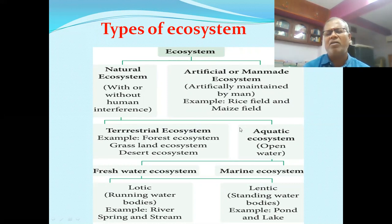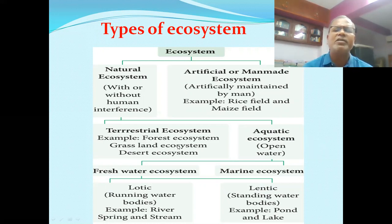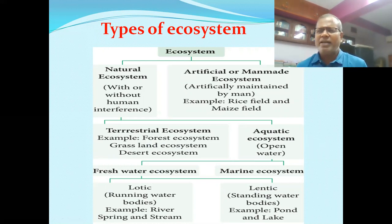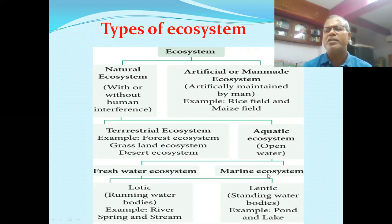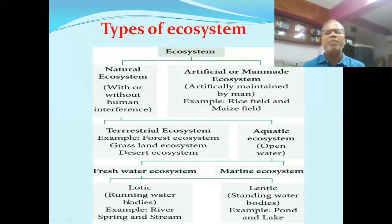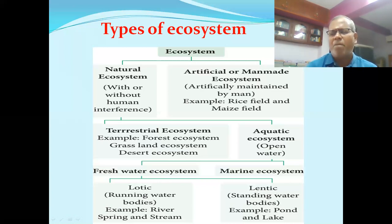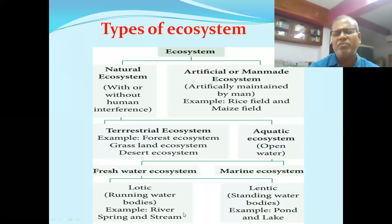Natural ecosystem is divided into two types: terrestrial and aquatic. Terrestrial ecosystem represents land; aquatic ecosystem represents all open water bodies. Terrestrial ecosystem includes forest, grassland, and desert. Aquatic ecosystem is classified into freshwater and marine. Freshwater has less salt content; marine has more. Freshwater is further divided into lotic — running water bodies — and lentic — standing water bodies.